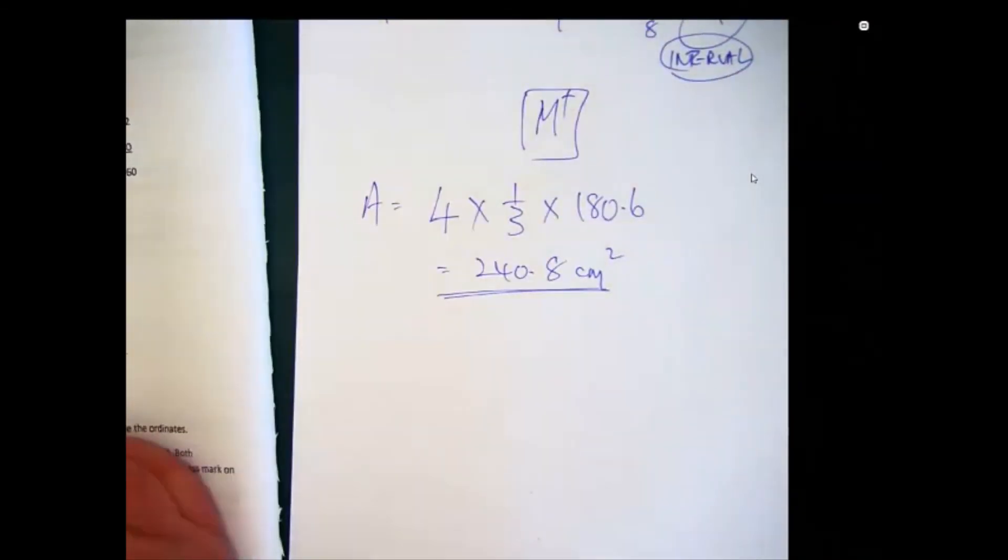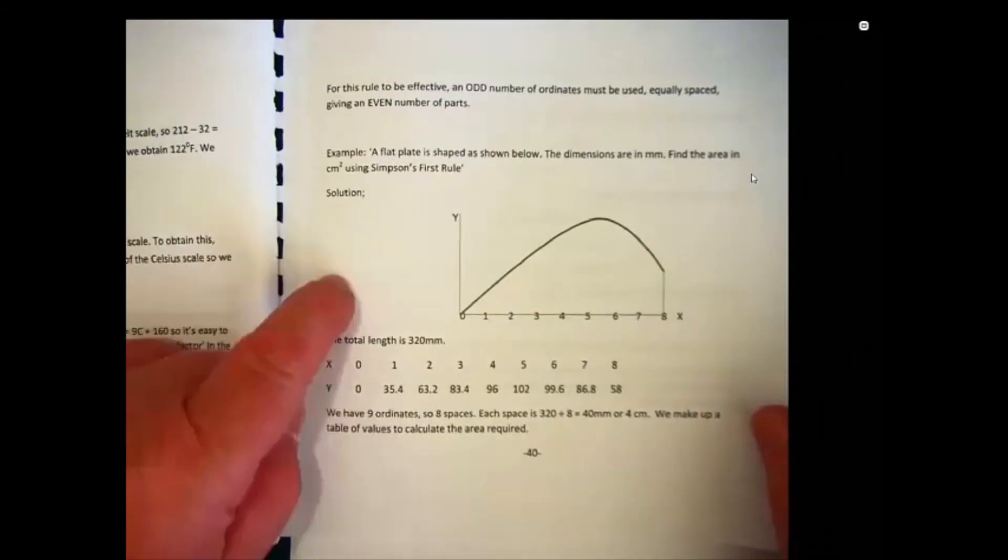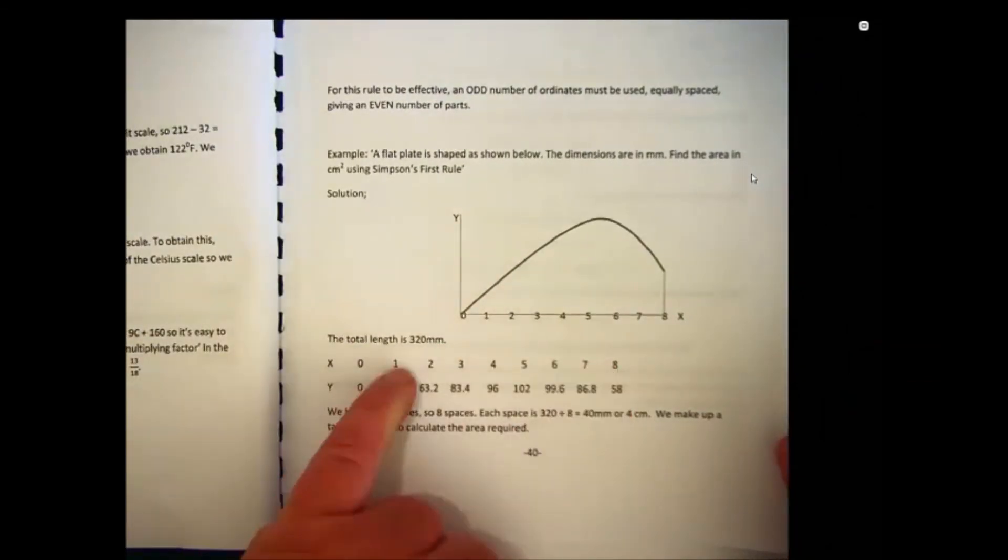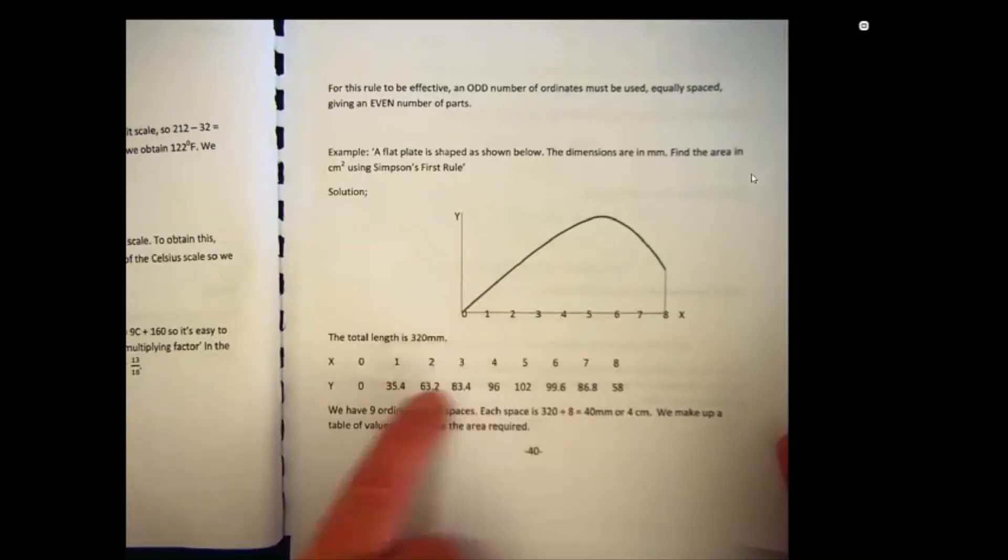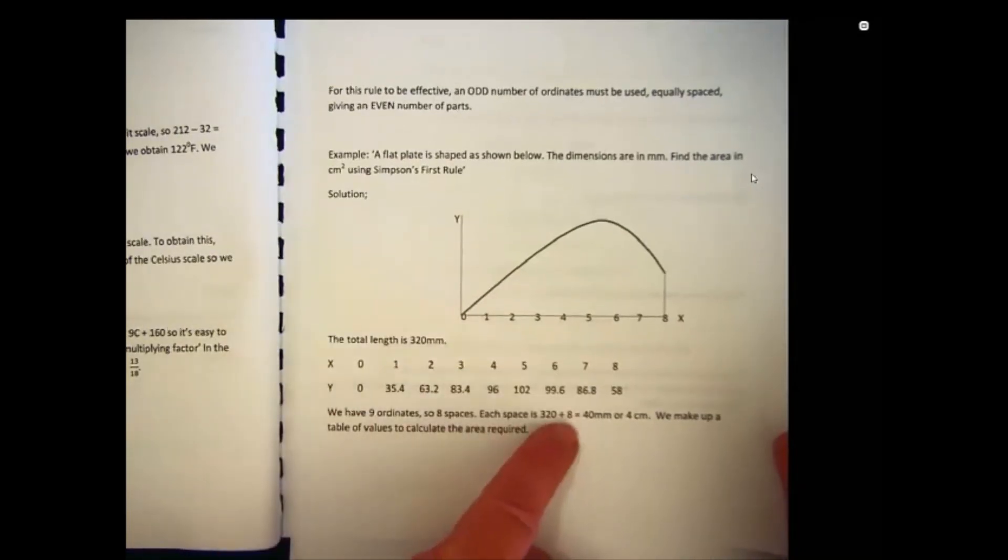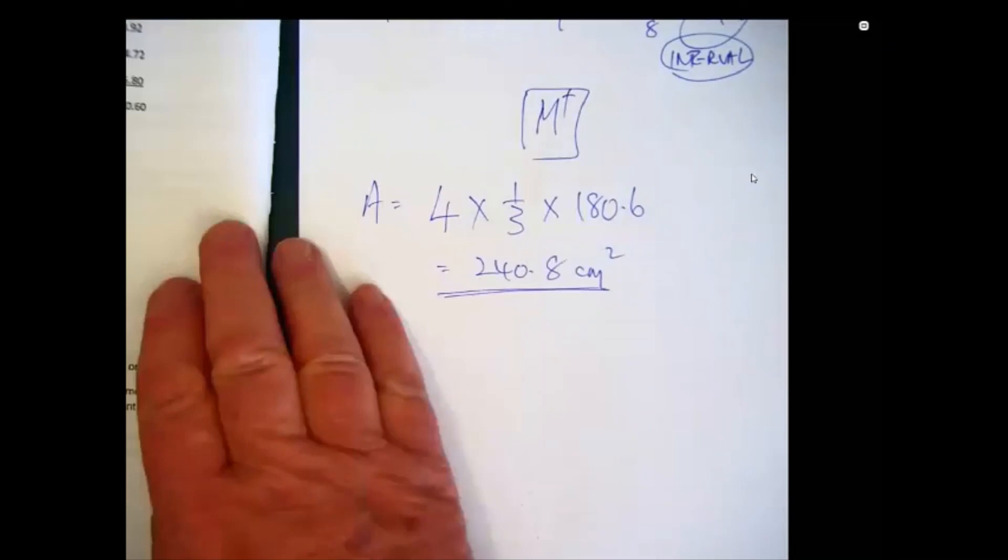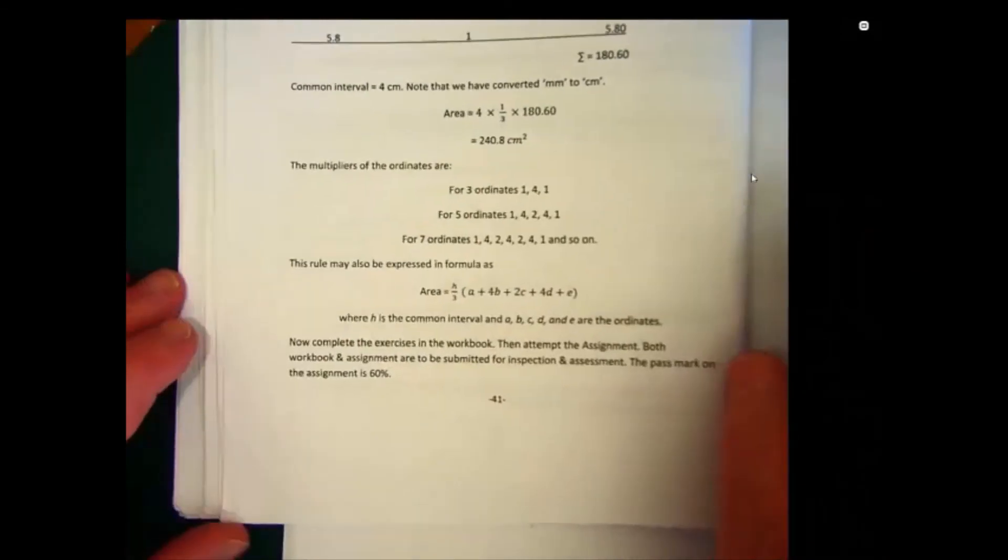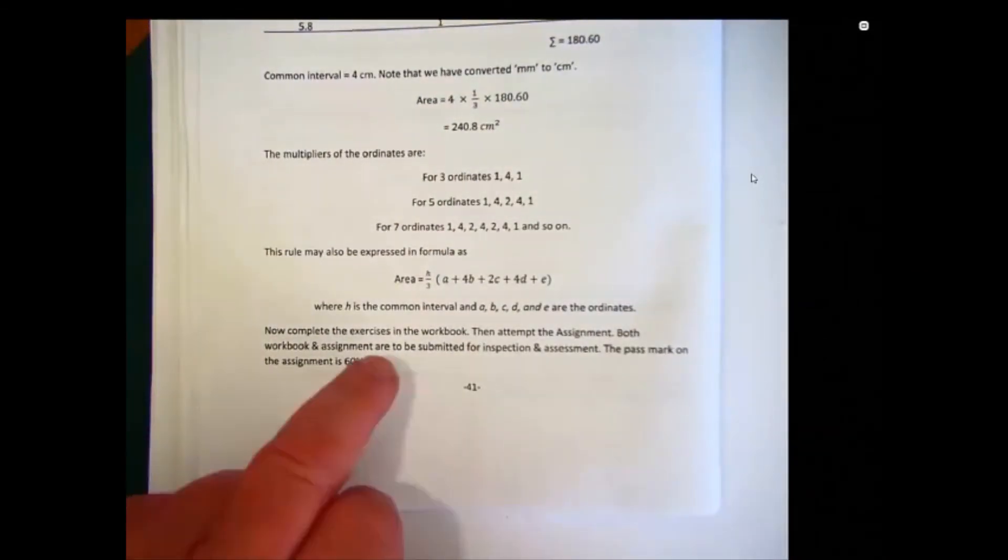So once you know the actual data that the examiner has given you, you've got your x and y values. These will give you, the x values will give you the interval, the y are the ordinates to multiply out. Read the question carefully and put the answer in the right unit, and then there's no problem. Now at this stage, we have...